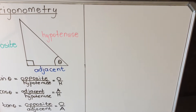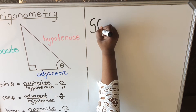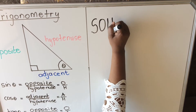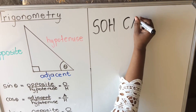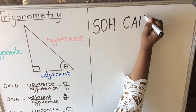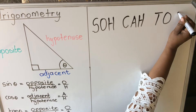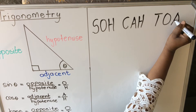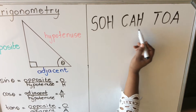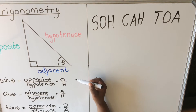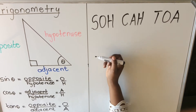There is an acronym to help you remember: SOH-CAH-TOA. Sine is opposite over hypotenuse, cos is adjacent over hypotenuse, and tan is opposite over adjacent. When you read it you say 'SOH-CAH-TOA.' Memorize this acronym and use it to remember which ratio goes with which sides.